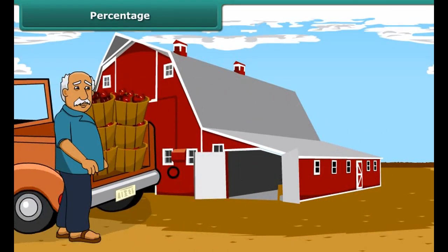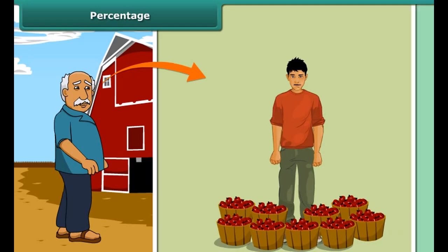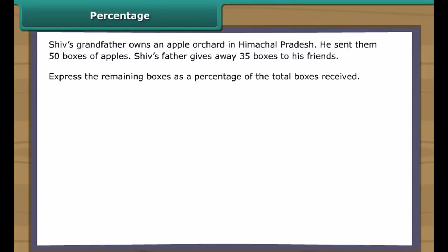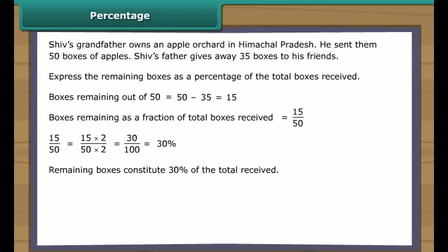Shif's grandfather owns an apple orchard in Himachal Pradesh. He sent them 50 boxes of apples; Shif's father gives away 35 boxes to his friends. Boxes remaining equals 50 minus 35, which equals 15. Boxes remaining as a fraction of total equals 15/50. Converting the denominator to 100: 15/50 equals 30/100, which equals 30%. Remaining boxes constitute 30% of the total received.